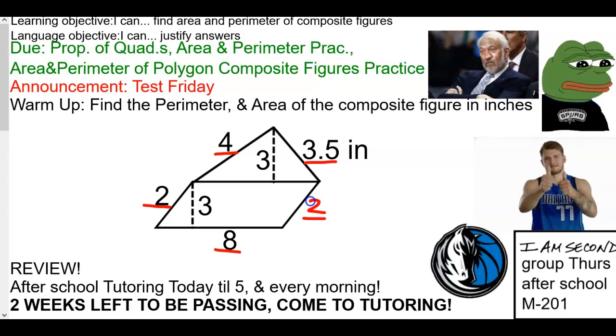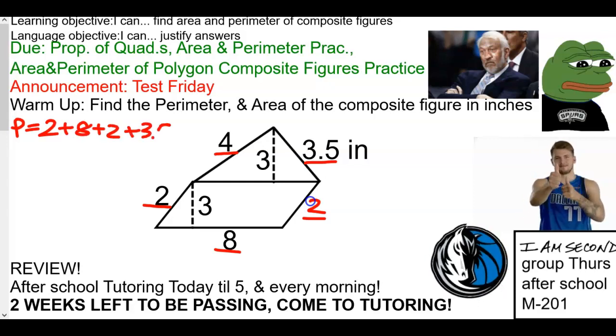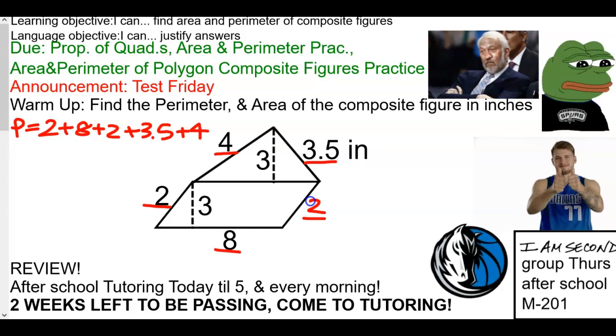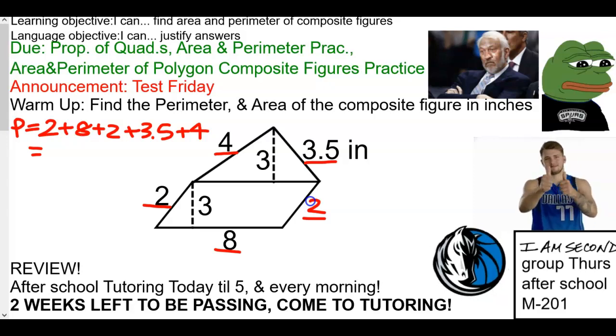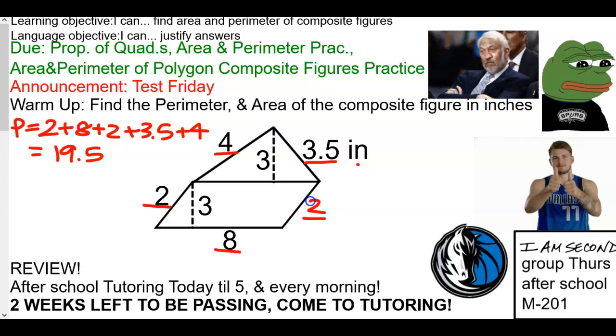Perimeter, we're going to add those up. So, 2 plus 8 plus 2 plus 3.5 plus 4. And I heard 19.5? Yes. And all these measurements are supposed to be inches. Is it squared or not? Not squared because it's one-dimensional distance, length, whatever you want to say.